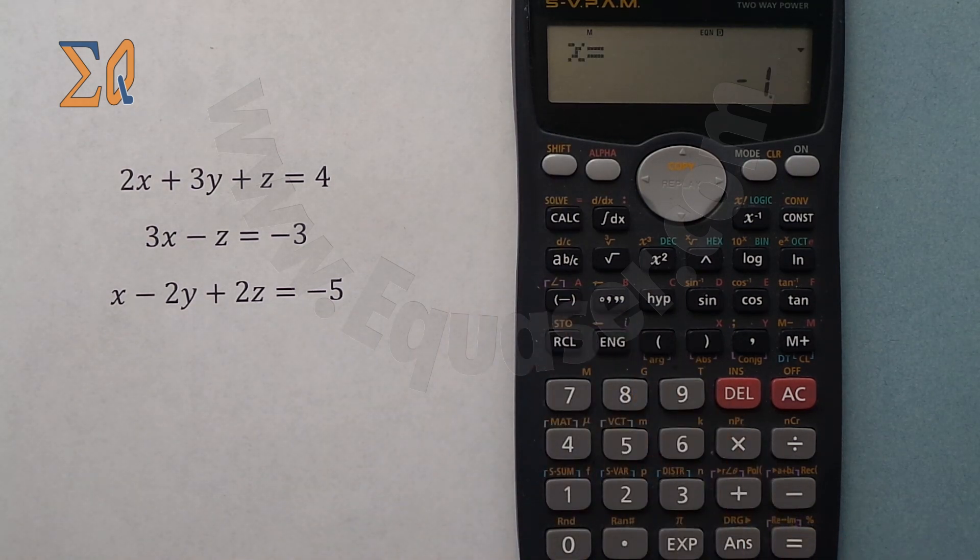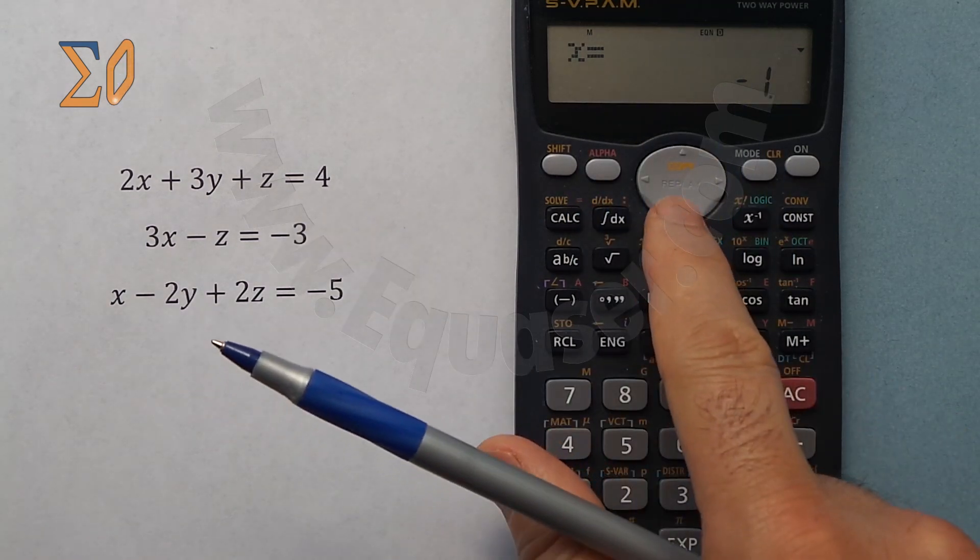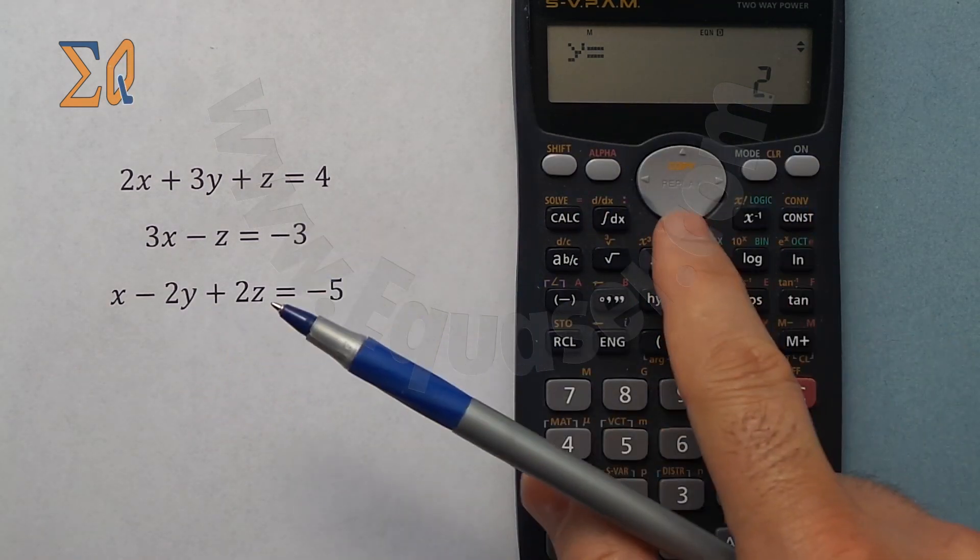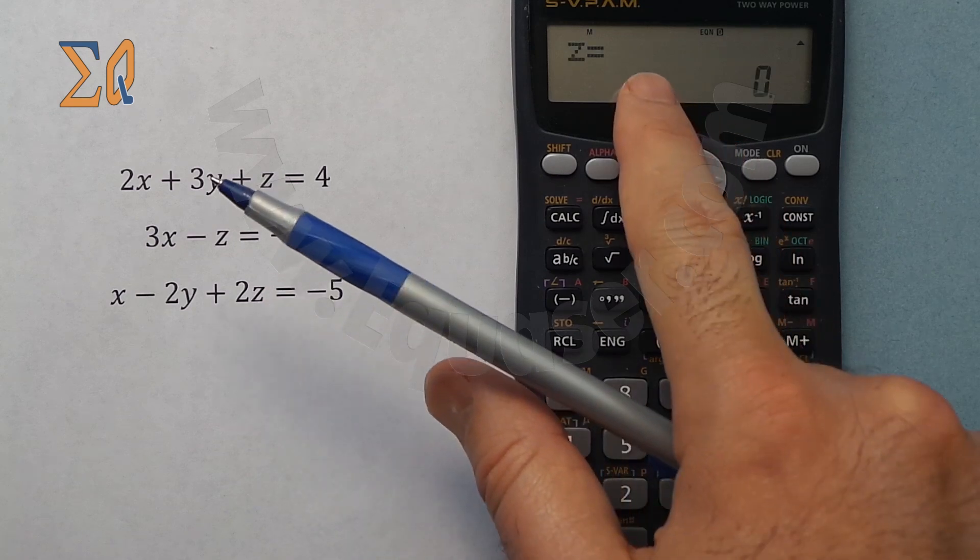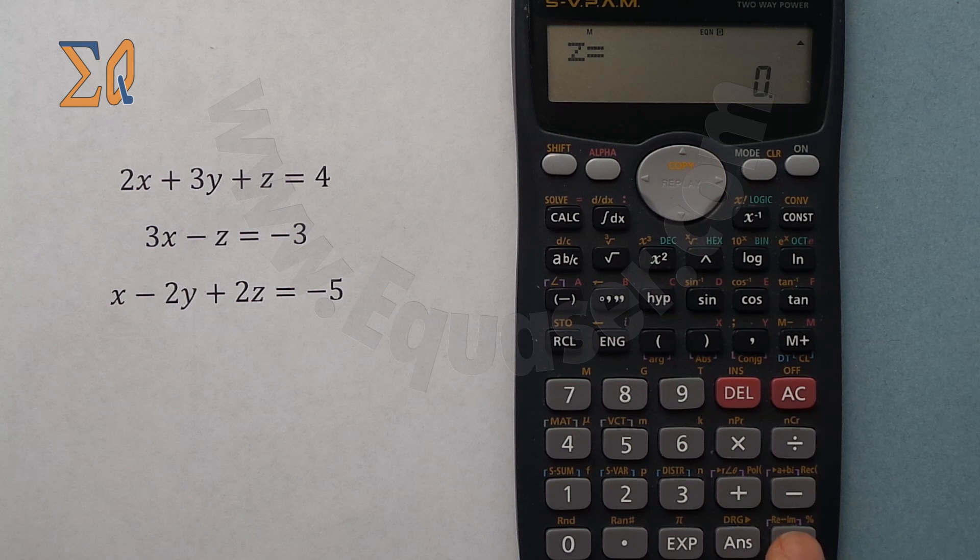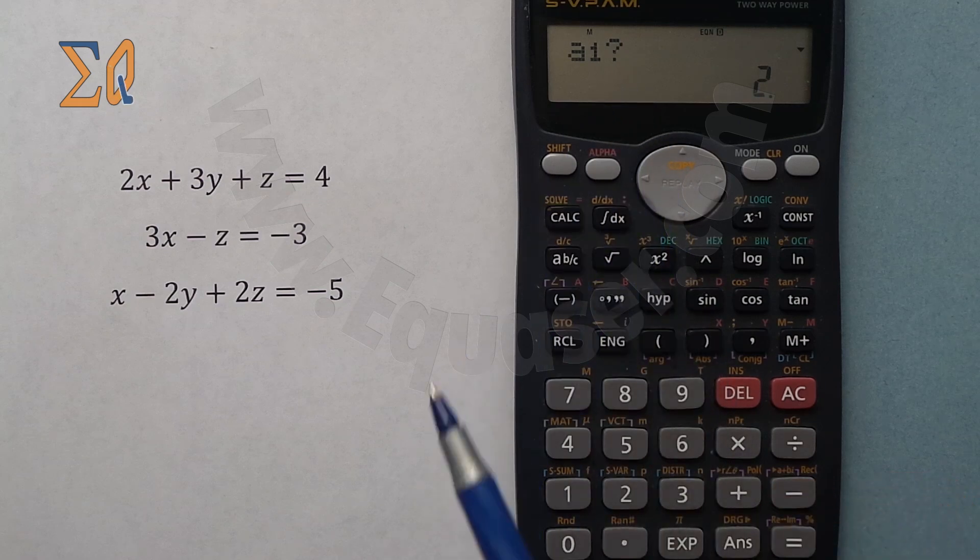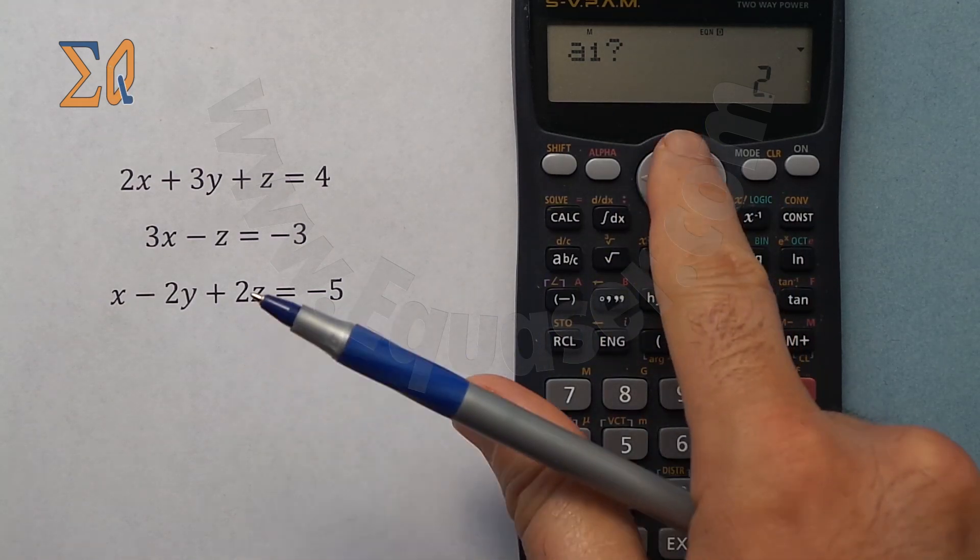As soon as I press equal sign I get the value. So x is minus 1, y is 2, and z is 0. So I press equal sign continuously until I get all the values. When I get all the values it returns back, so it waits so you can enter other values.